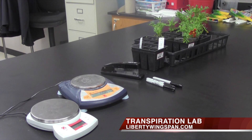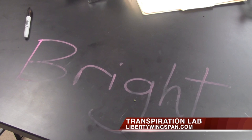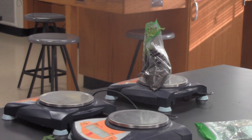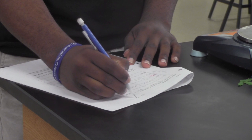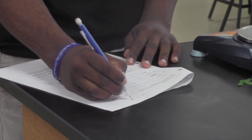Students picked four bedding plants to place in four different conditions: humid, windy, sunny, and control. Each plant is then placed in a Ziploc bag with soil in it. Once that was completed, they recorded the initial mass of the plants before beginning the experiment.